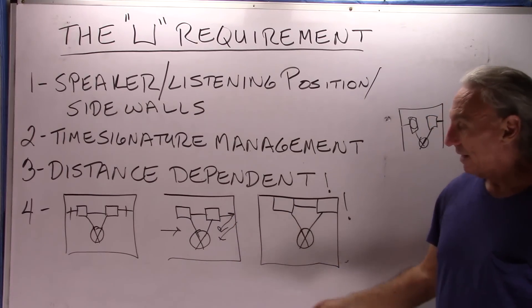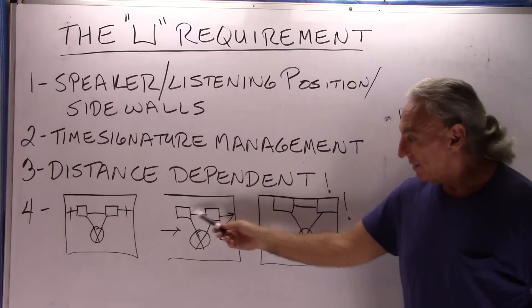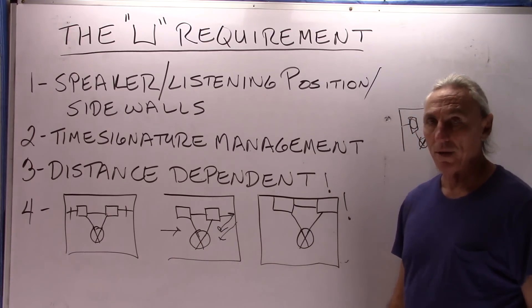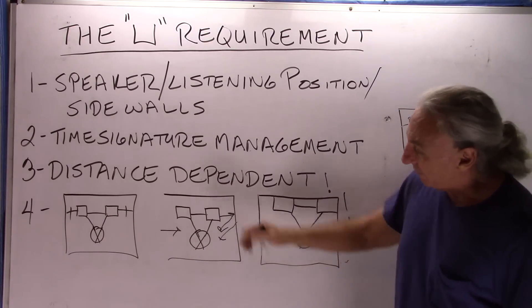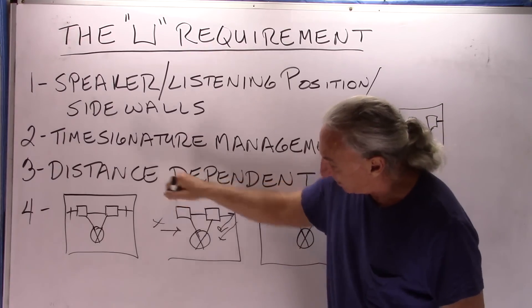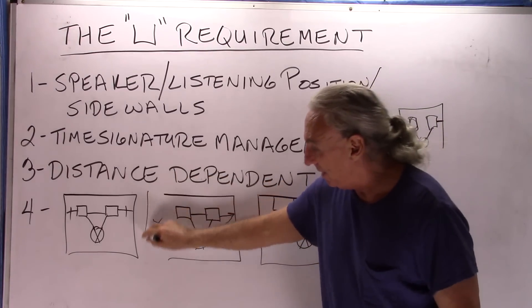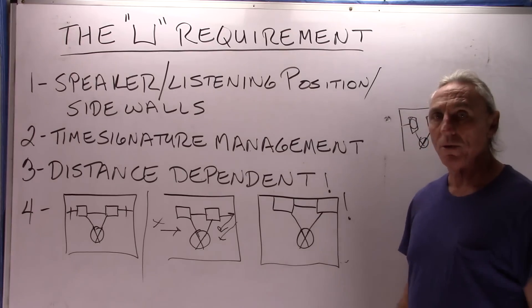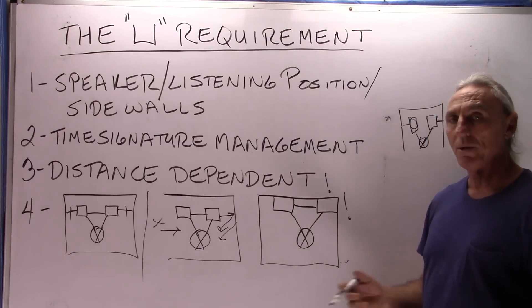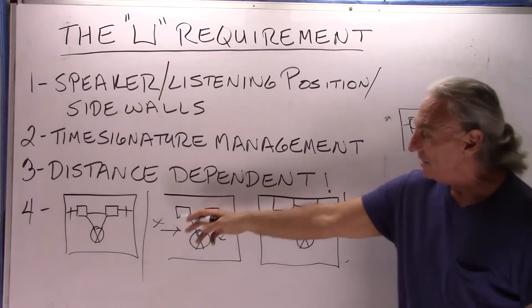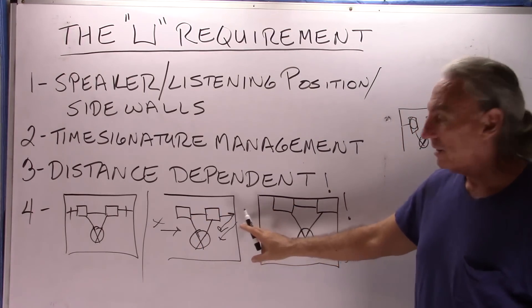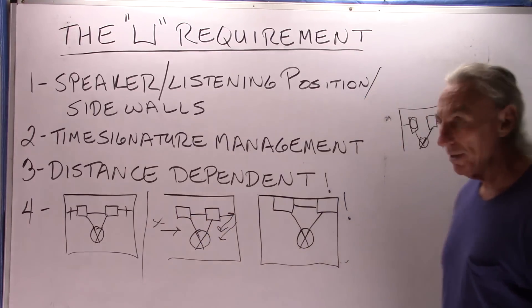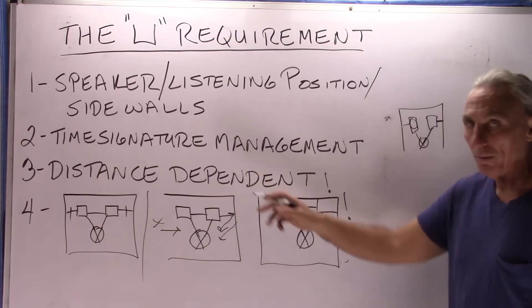The goal is to set that up in a room that has both sidewalls and a front wall. A lot of times I see a left and right channel setup with a right sidewall and no left sidewall. The time signature on this open area is going to depend on whatever is back there, and we don't know. So we don't have any predictability or consistency. Both sidewalls have to be there, and the front wall also.